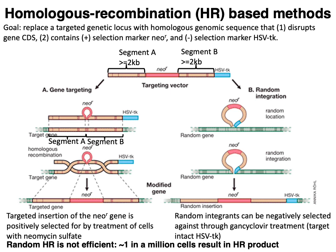Once you introduce the targeting construct into the cell, through two homologous recombination events the targeting construct gets inserted into the homologous genetic locus. Upon successful integration, the NEO-R gene confers resistance to neomycin, which is a compound that interferes with protein synthesis in eukaryotic cells. So when you have successful integration, you prevent the action of neomycin.